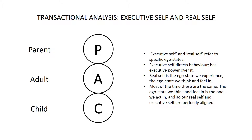The executive self and real self are titles which refer to specific ego states. The executive self is the ego state that directs our behavior, or how we act. This ego state can be described as having executive power over our behavior. The real self, on the other hand, is the ego state we experience — the ego state we feel and think in. Most of the time, these are the same, and so our executive self and real self are perfectly aligned.